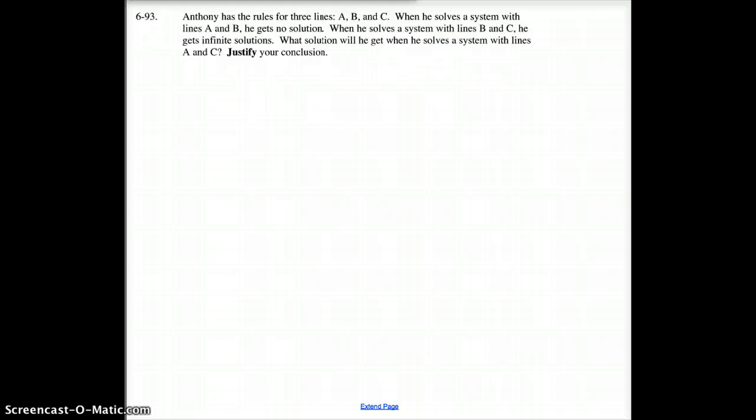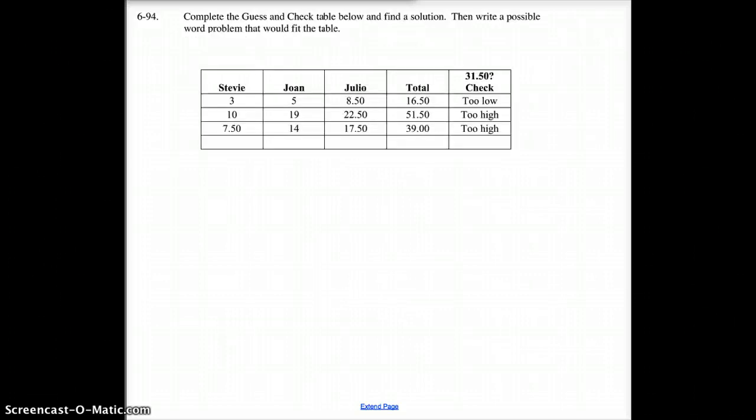Number 93. You've got these three lines. You've got to answer what would A and C look like compared to each other. 94. You're going to have to figure out what is the rule for Stevie, what's the rule for Joan, what's the rule for Julio, and kind of put that all together. And then you're going to make up your own word problem for that. So, that shouldn't be too terribly difficult for you.